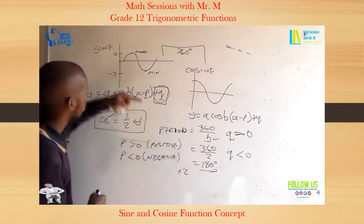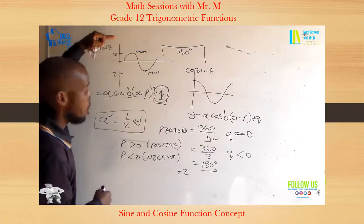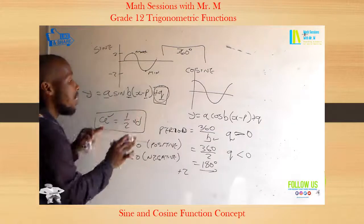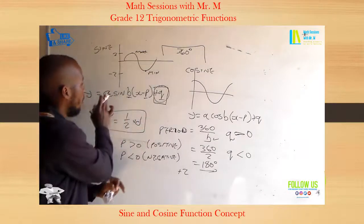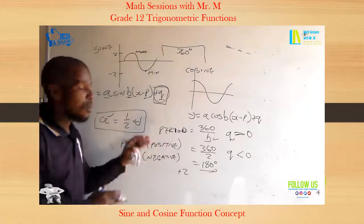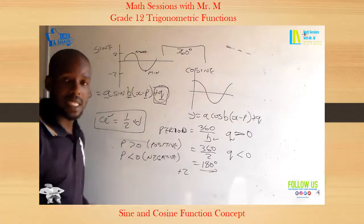So that is the effects on the graph of A, B, P, and Q. That is what it does on the cosine and the sine graph.